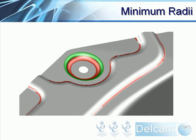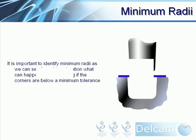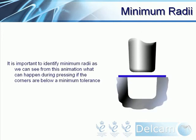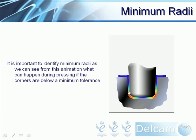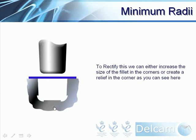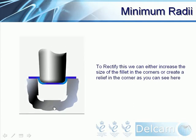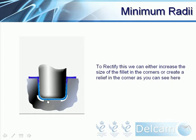We will be using PowerShape's minimum radii shading to identify areas where the radii fall below a minimum tolerance. It is important to identify the minimum radii — as shown in the animation, high levels of stress or strain can be placed on areas during pressing if corners are below a minimum tolerance, highlighted in red. To rectify this, we can either increase the size of the fillet in the corners or create a relief in the corner, which removes the highlighted red areas.